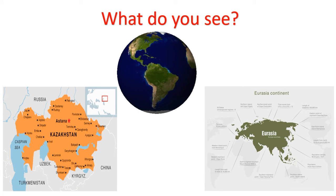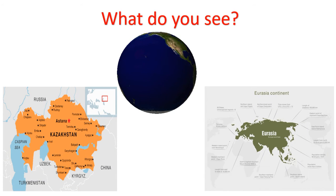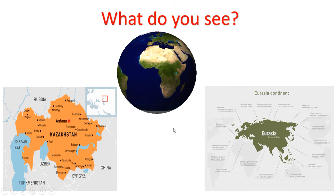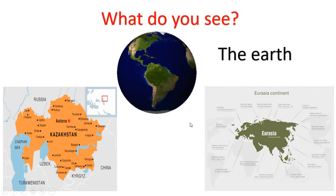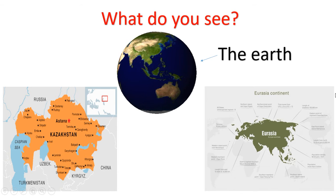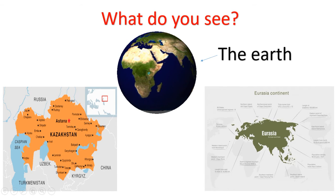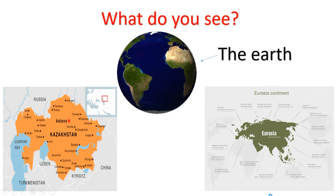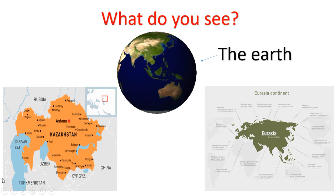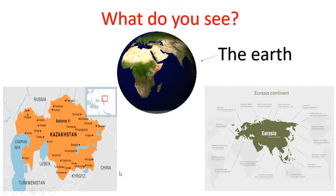Look at this slide. What do you see on it? This is a planet — this is our planet, which is called the Earth. Look at the picture. What do you see on the right? It's the Eurasia continent. And on the left, we can see the Kazakhstan map.